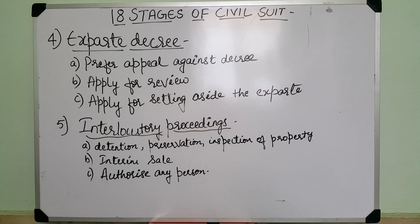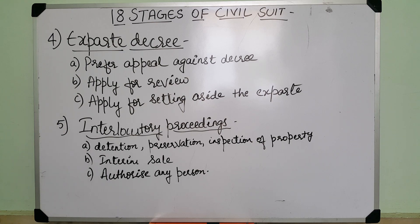The first one is ex parte decree. A decree against the defendant without hearing him or in his absence is an ex parte decree. If the ex parte decree is passed and the defendant satisfies the court for the reason given, then the defendant has remedies: prefer appeal against the decree, apply for review, or apply for setting aside the ex parte decree. I have discussed ex parte decree in detail in another video — link is in the description box.